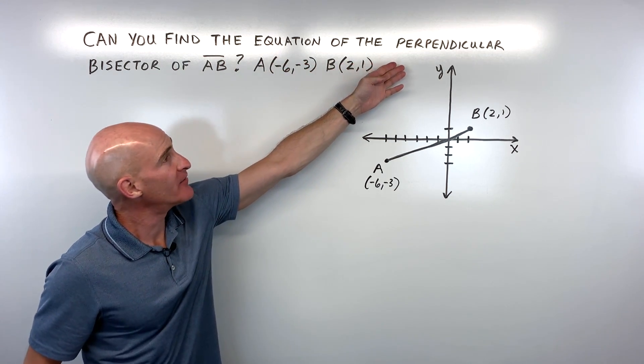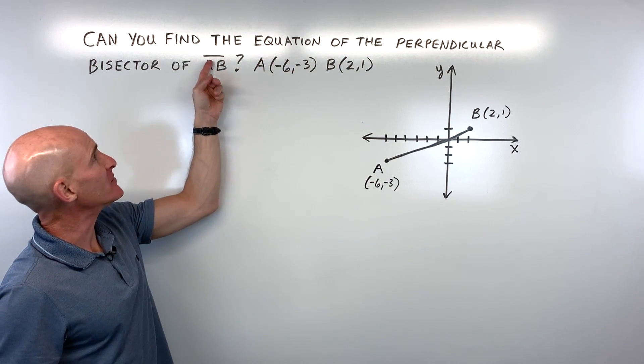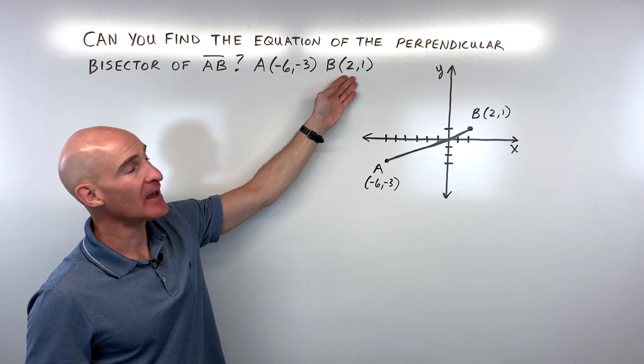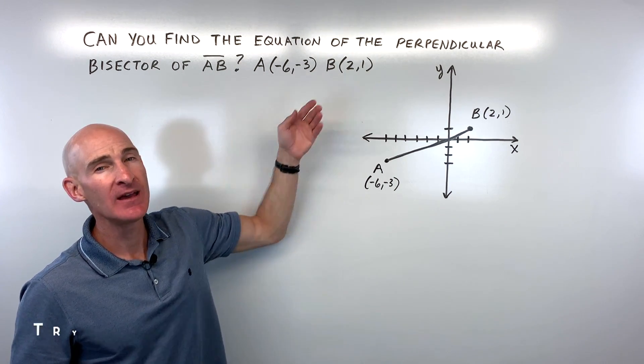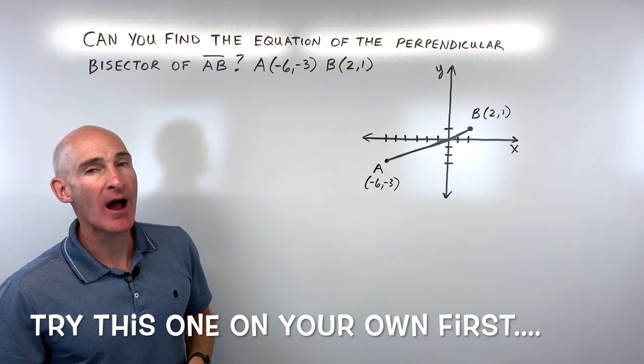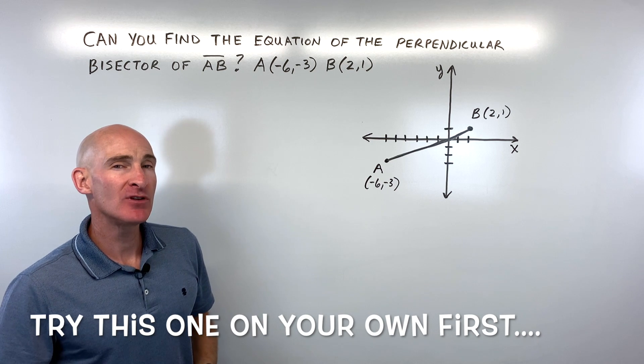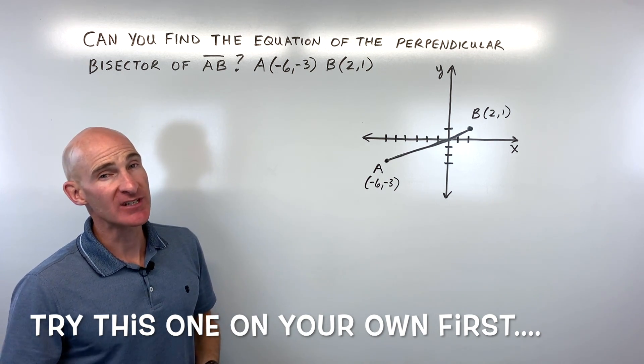Can you find the equation of the perpendicular bisector of segment AB, where A is negative six, negative three, and B is two comma one? See if you can pause the video and do this problem. It's a multi-step problem and there's a few formulas that you need to know, but see if you can give it your best shot and we'll go through it together.